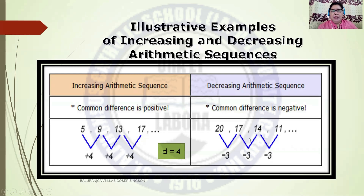For a decreasing arithmetic sequence, given 20, 17, 14, and 11: 17 minus 20 is negative 3, 14 minus 17 is negative 3, 11 minus 14 is negative 3. Therefore, the Common Difference is negative 3. So it is negative, and that's why we call this a Decreasing Arithmetic Sequence.